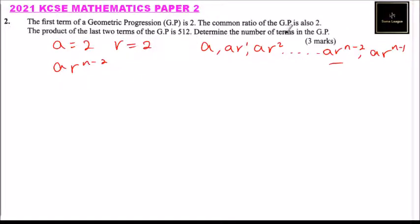We are told the product of the two, so if you multiply ar^(n-1) by ar^(n-2), this product should give you 512. Since we have been given a, the first term, this means it is 2.